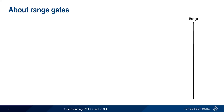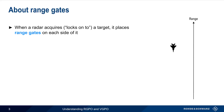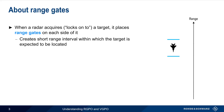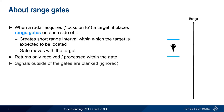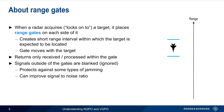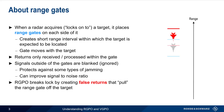Let's start with Range Gate Pull-Off. When a radar acquires or locks onto a target, it places so-called range gates on each side of it. These gates create a short range interval within which the target is expected to be located, and this gate will move with the target. Radar returns or echoes are only received and processed within this gate, and signals outside of these gates are blanked or ignored. Using range gates provides protection against some types of jamming and can also improve the signal-to-noise ratio of the received returns. Range Gate Pull-Off breaks the radar lock by creating false returns that pull the range gate off the target.